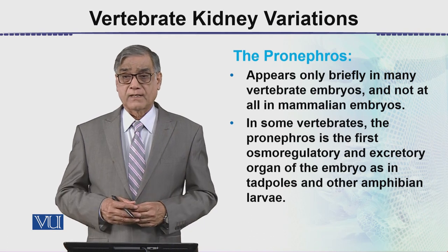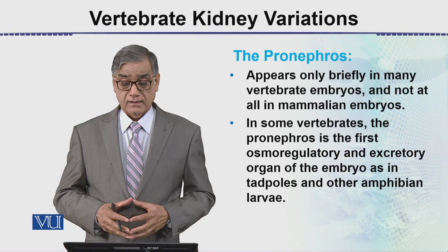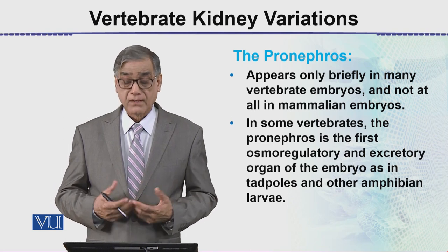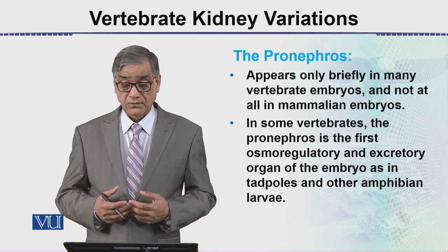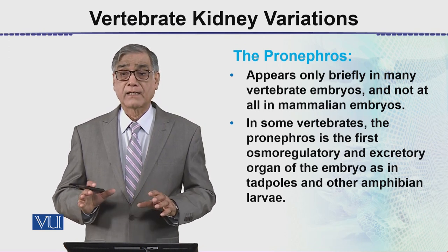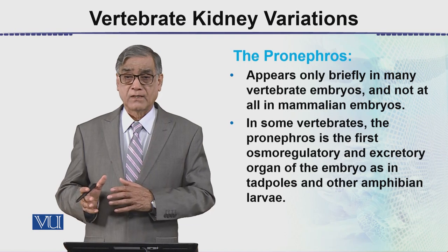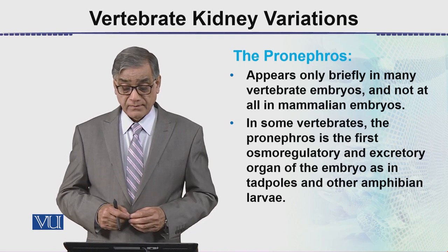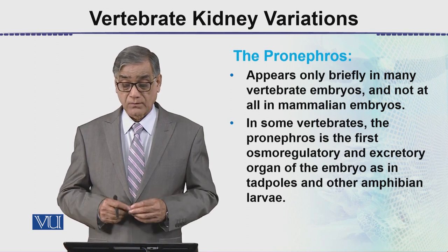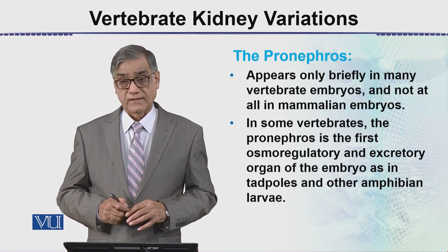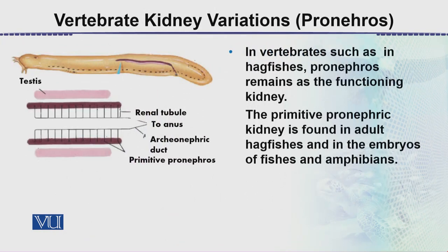The pro-nephros appears very briefly in many vertebrate embryos, and not at all in mammalian embryos — or if it forms, it is for a very short duration and is not the ultimate form. In some vertebrates, the pro-nephros is the first osmoregulatory and excretory organ of the embryo, as in tadpoles and other amphibian larvae. In vertebrates such as hagfishes, the pro-nephros remains as the functional kidney.